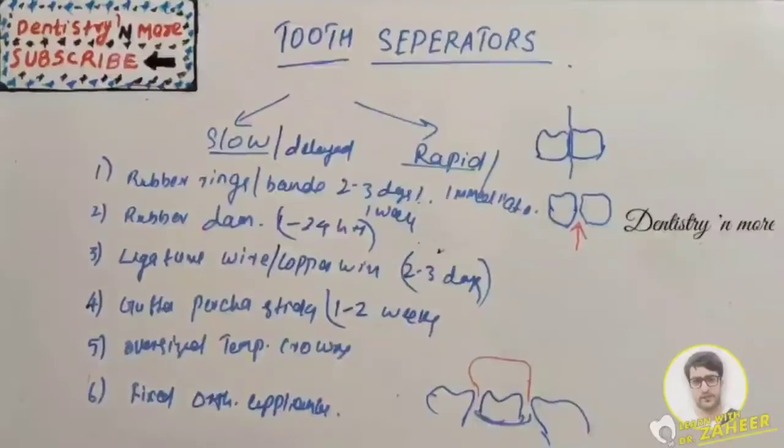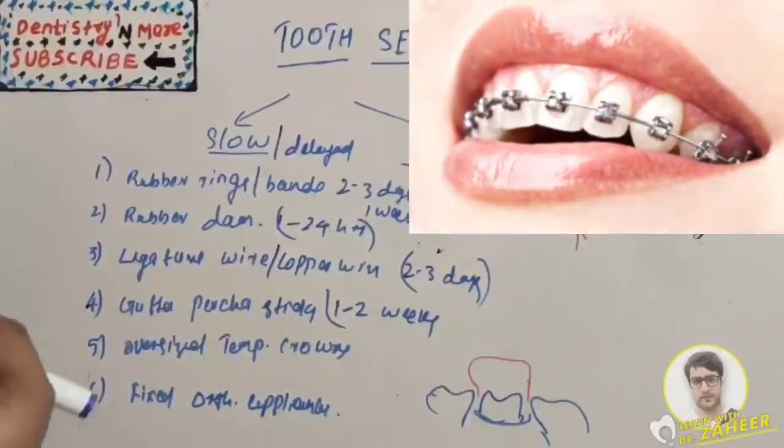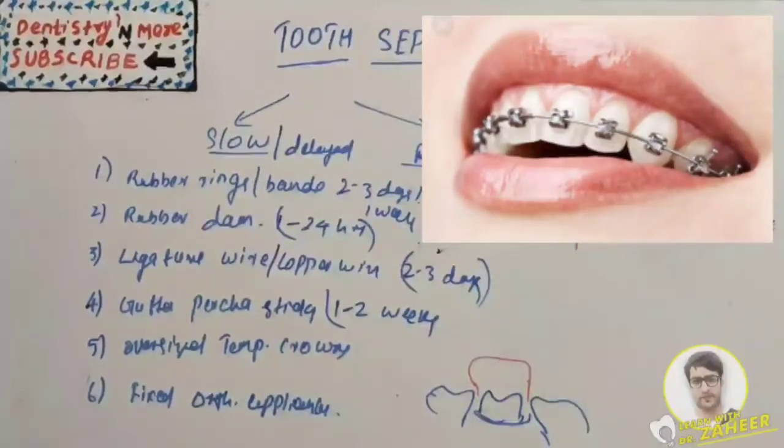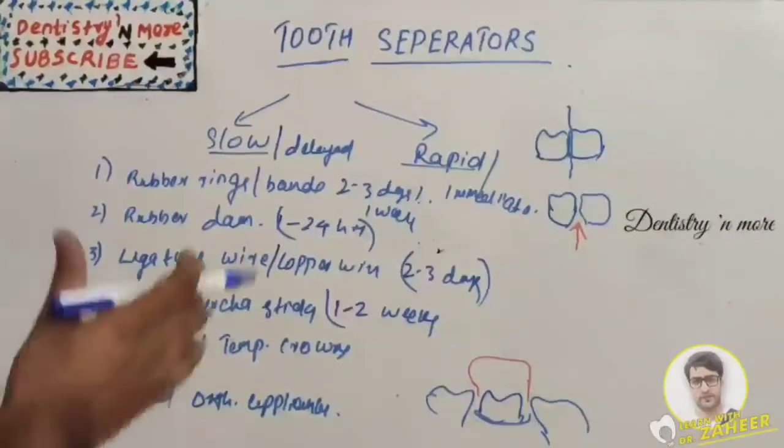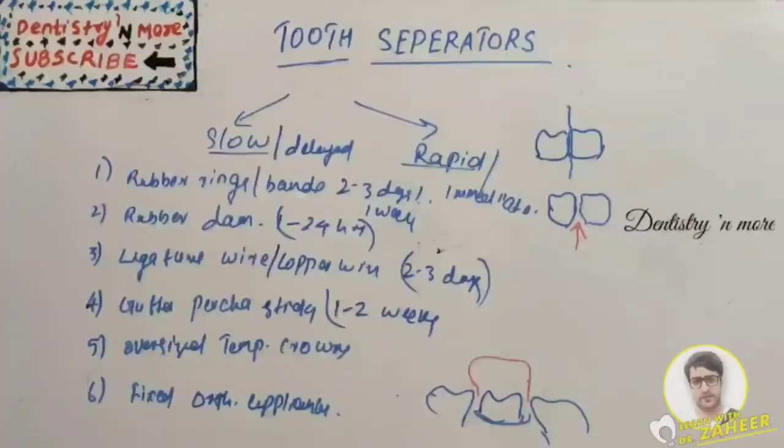Last one is fixed orthodontic appliances, indicated only when extensive repositioning of tooth is required. It's the most predictable and effective method. That is about slow or delayed separation.